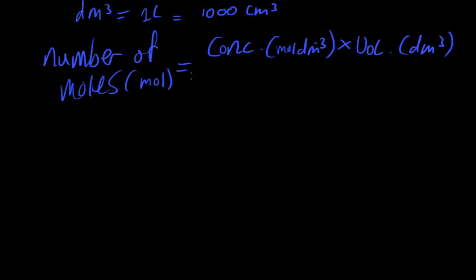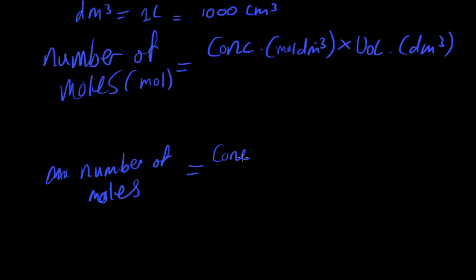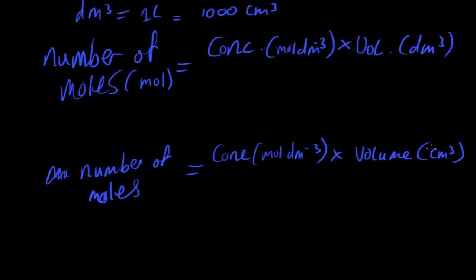The second equation is used if the volume is given in centimeters cubed. Number of moles equals concentration (in moles per dm³) multiplied by volume in cm³. We need to convert cm³ to dm³ because the standard units for volume when finding the number of moles require the dm³ units to cancel out — that's why multiplying them gives us moles.